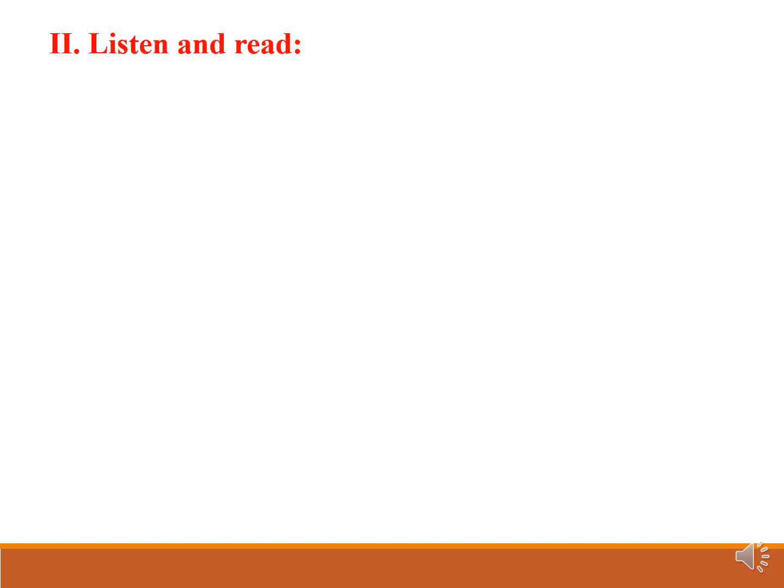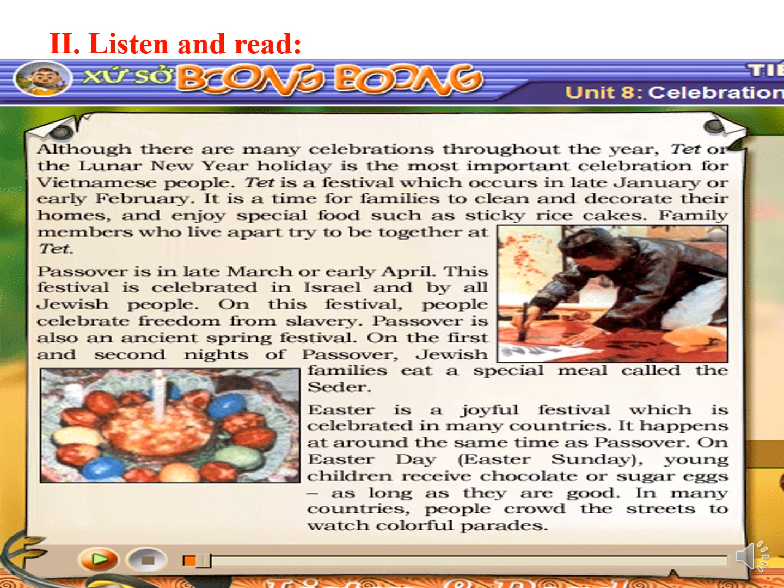Let's come to listen and read. Look at the text. Although there are many celebrations throughout the year, Tet or the Lunar New Year holiday is the most important celebration for Vietnamese people. Tet is a festival which occurs in late January or early February. It is a time for families to clean and decorate their homes and enjoy special food such as sticky rice cakes.